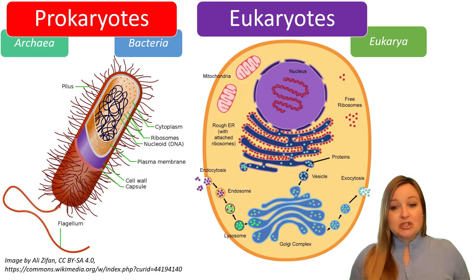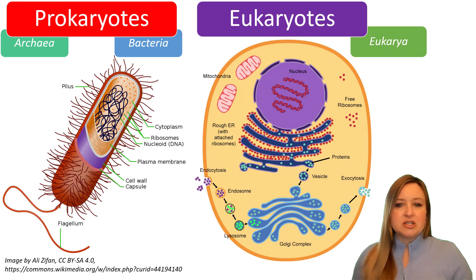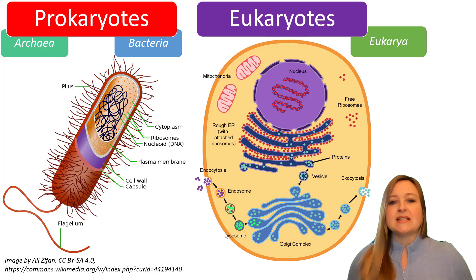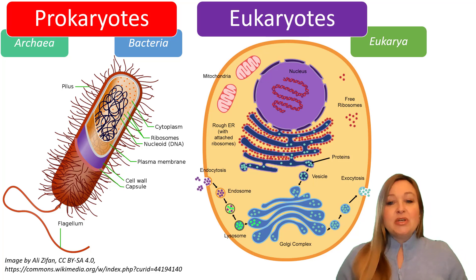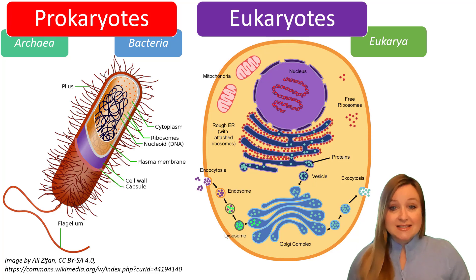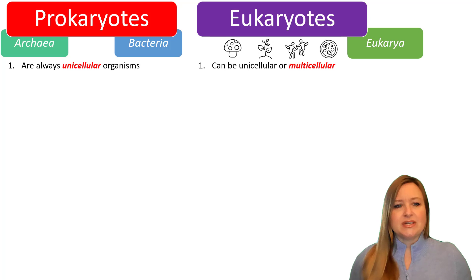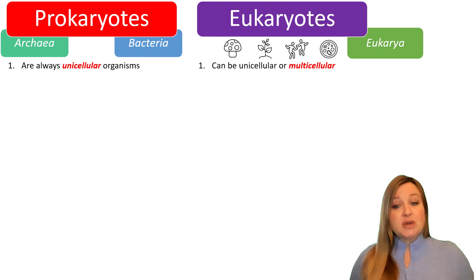Here is a typical drawing of a eukaryote. Just looking at these two, you can see that the eukaryotes tend to be a little more complicated. This isn't also to scale, because eukaryotic cells tend to be larger than prokaryotic cells. You can see it also has DNA inside of it, a cytoplasm, and ribosomes as well, but it has other structures within it too. Prokaryotes are always unicellular organisms, whereas eukaryotes can be unicellular or multicellular.